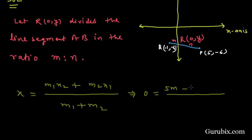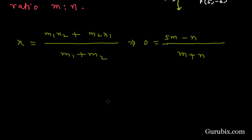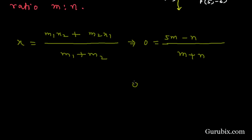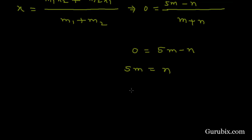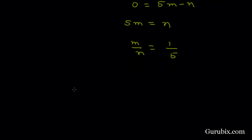Solving further: 0 = 5M - N, which gives 5M = N, or M/N = 1/5. Therefore the required ratio M : N is 1 : 5.